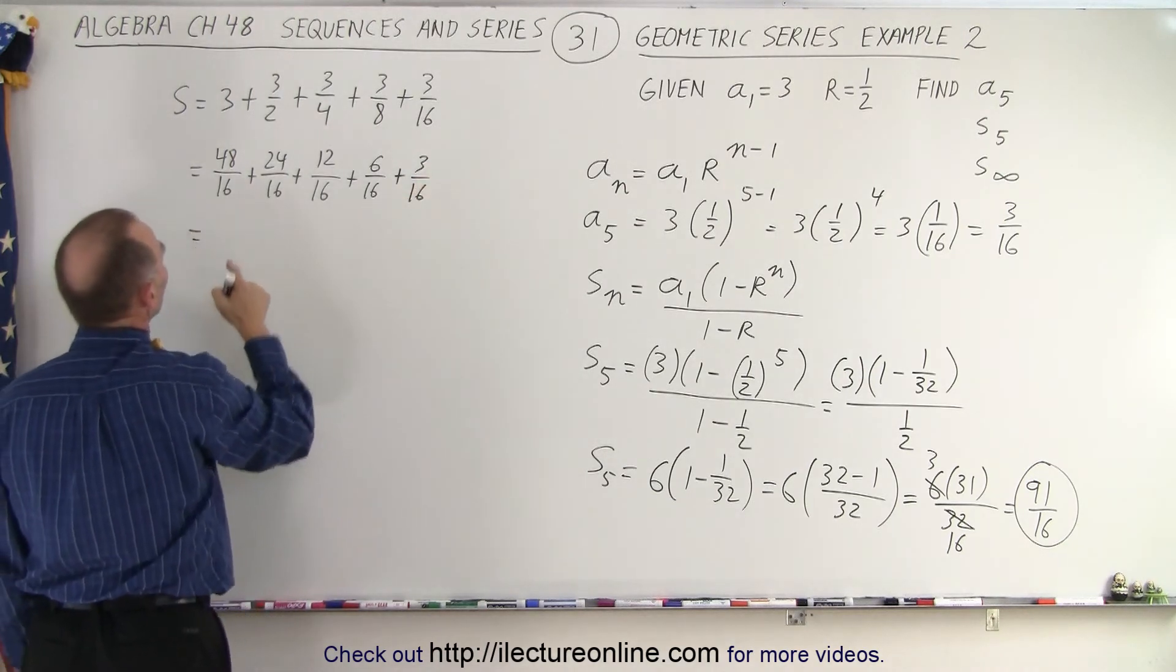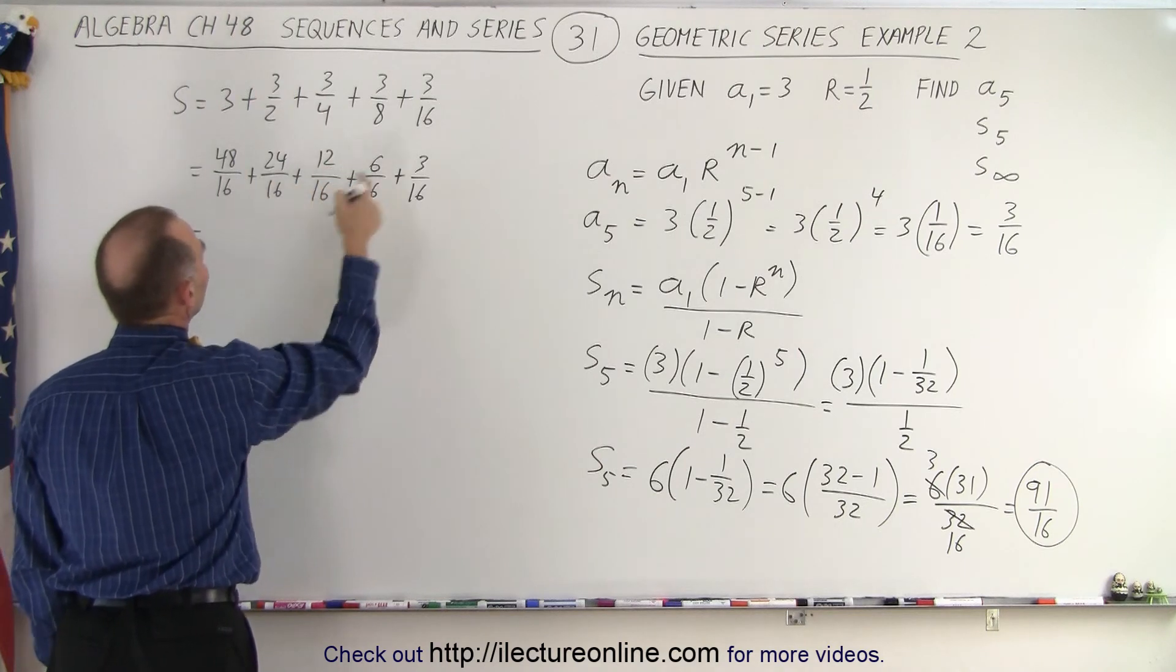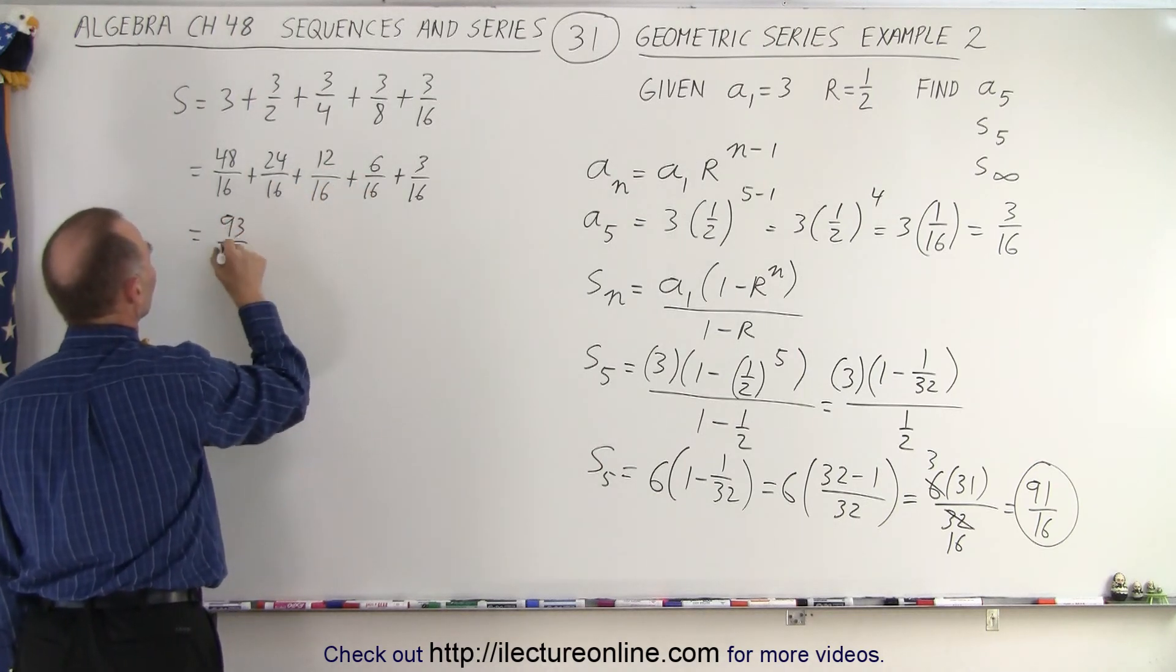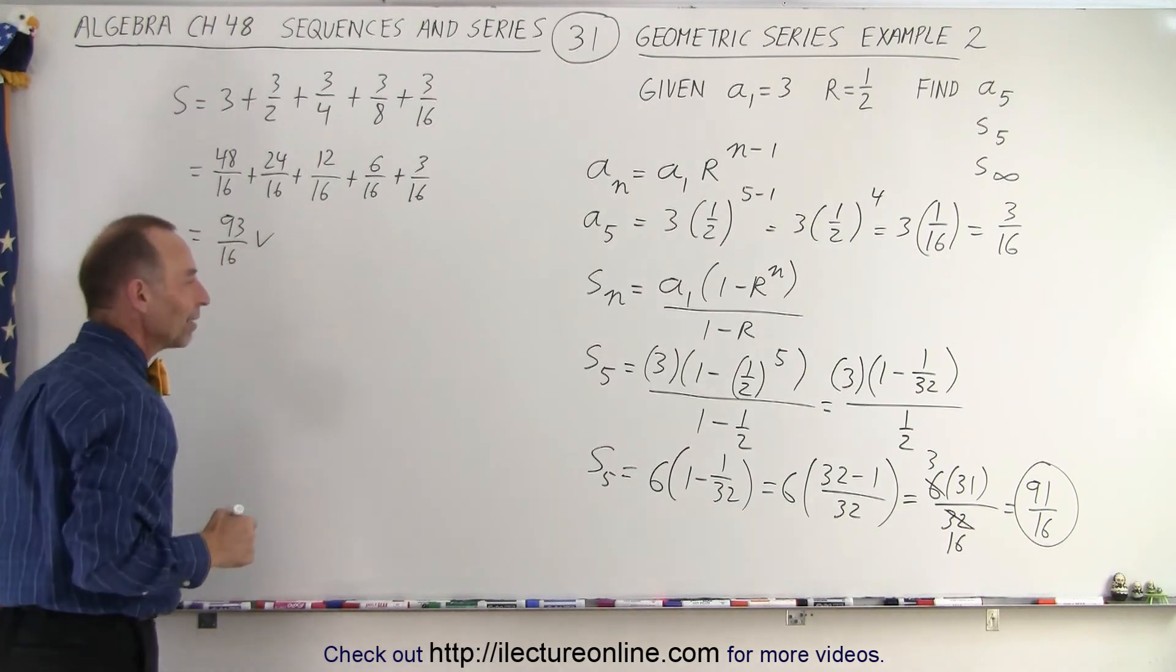All right. So that's equal to 48. That's 68. That's 72. 82, 84. 90, 93 over 16. And sure enough, that is the number that we derived over there.